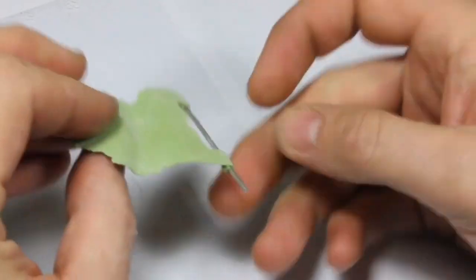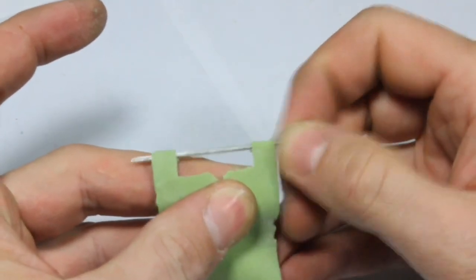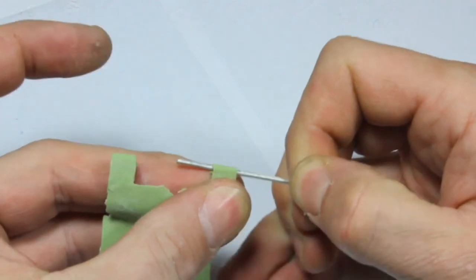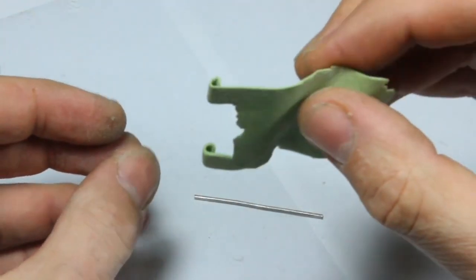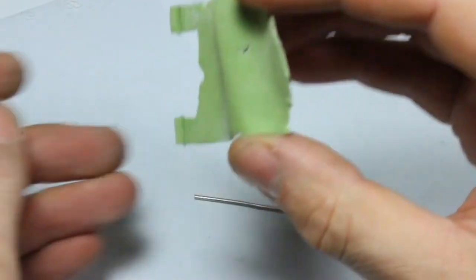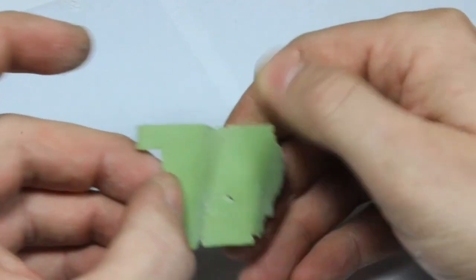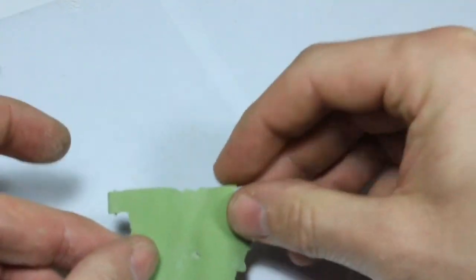Once fully cured, you can remove the pole. A little sanding with fine sandpaper may be needed before painting. I hope you enjoyed the video. If you did, please remember to leave a like and subscribe.